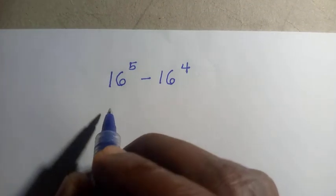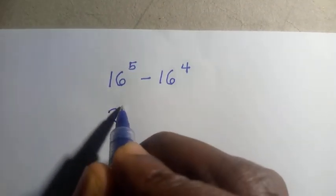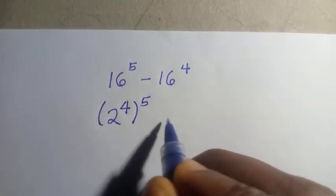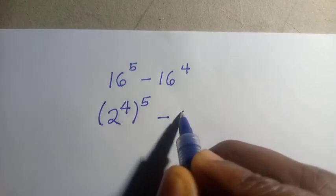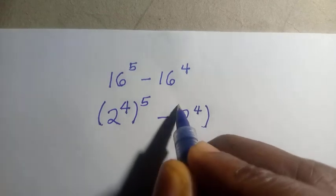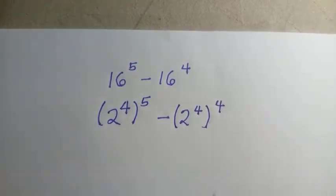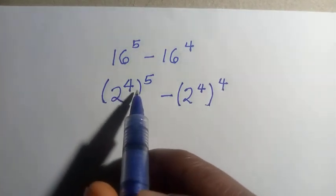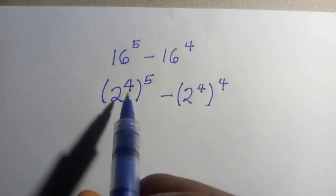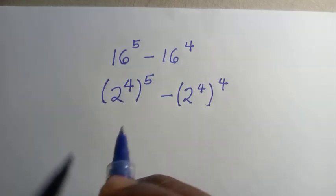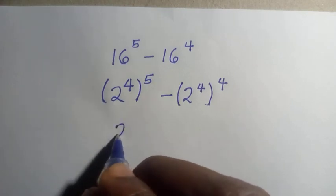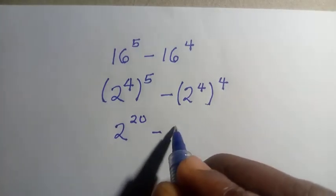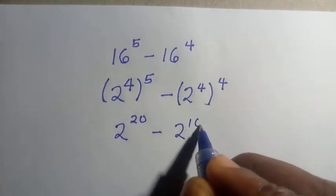Here we are going to write this as 2 to the power of 4, which is 16, all raised to the power of 5, minus 2 to the power of 4 raised to the power of 4. By the rule of indexes — the product law — we multiply the exponents together, so we have 2 to the power of 20 minus 2 to the power of 16.